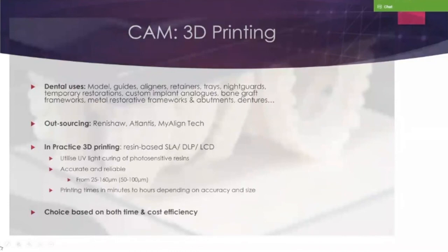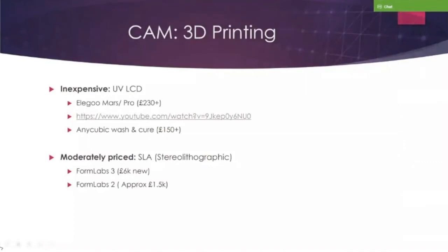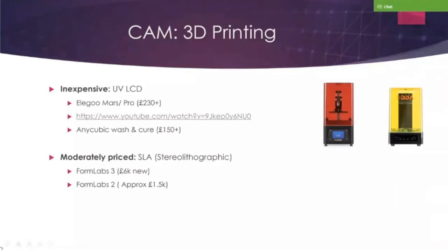In-house resin-based 3D printers use stereolithographic, DLP, or LCD technology. These each utilize a UV light source and a photosensitive resin that is cured onto a build platform. They're surprisingly accurate and reliable, definitely in the 50 to 100 micron range. Printing times can be minutes to hours depending on what you're printing. If you're looking to get on board with this, the good news is you can buy quite inexpensive 3D printers based on UV LCD technology, such as the Elegoo Mars Pro, which you can get starting on Amazon from £230. You would need to purchase a wash and cure station if any restorations are going near the mouth.